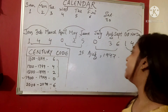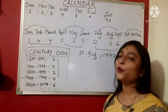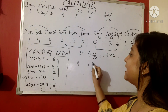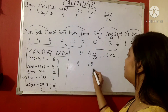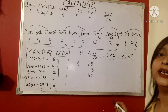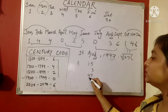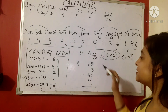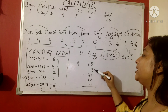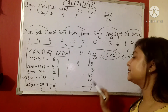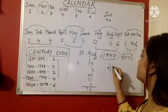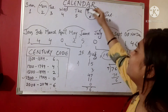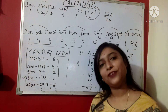Next, let's find the day for 15th August 1947 — a very important date, our Independence Day. Following the same five steps: date = 15, code for August = 3, last two digits = 47, quotient of 47 ÷ 4 = 11, century code for 1900s = 0. Adding: 15 + 3 + 47 + 11 + 0 = 76. Dividing 76 by 7 gives remainder 6, and 6 is the code for Friday. We got our independence on a Friday.